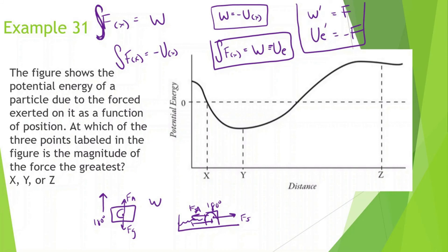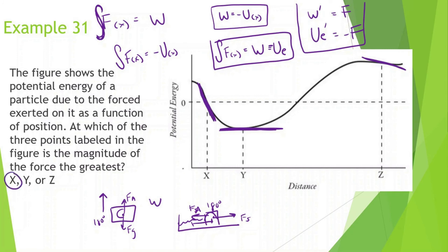The question asks: at which of the three labeled points is the magnitude of the force the greatest? The derivative at a point gives us the force. At point y, the slope is essentially zero — nearly zero force. At point z, there's a slight slope — slight force. At point x, there's a very steep slope, so x has the largest slope and therefore the largest magnitude of force.